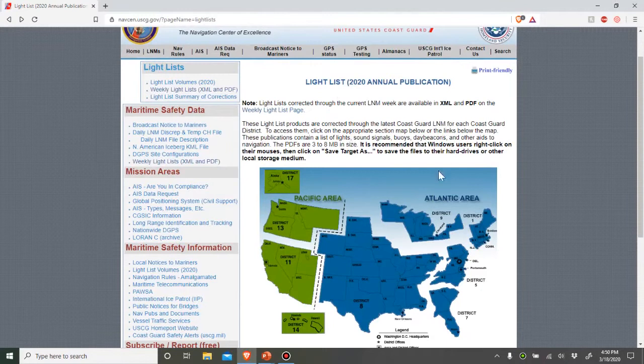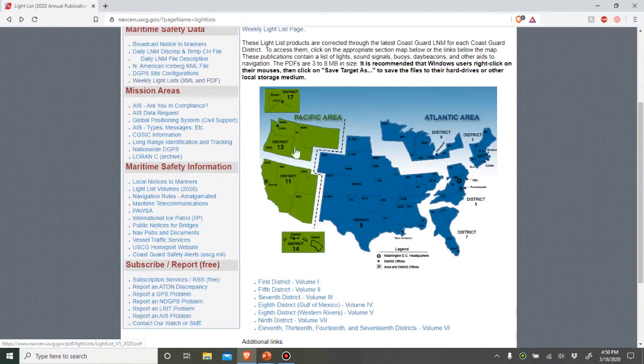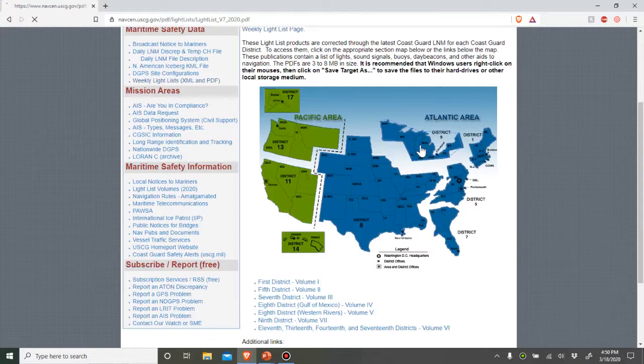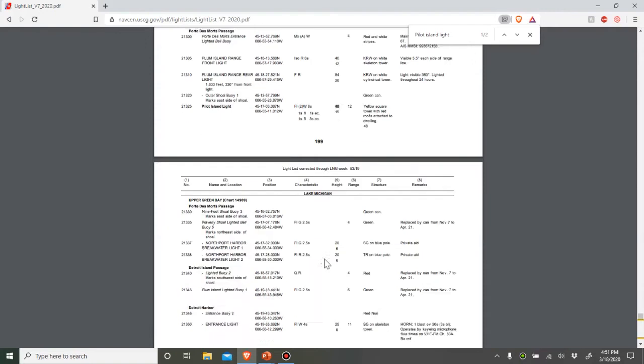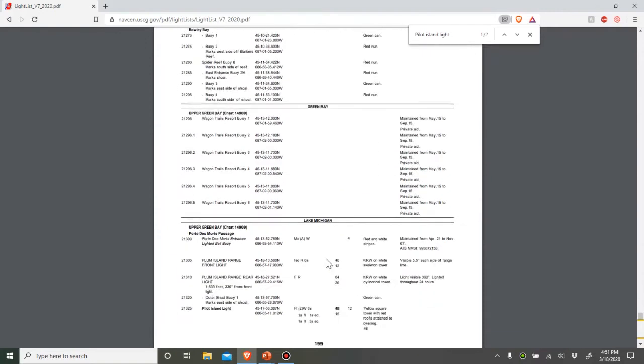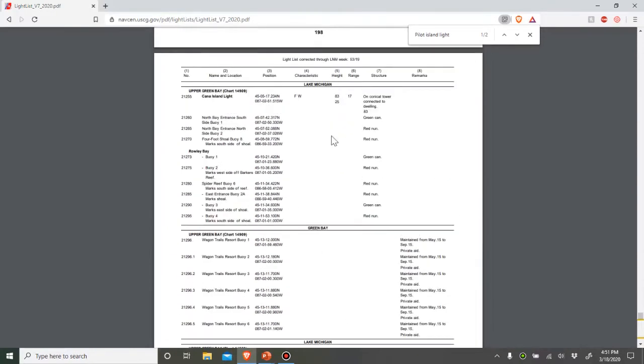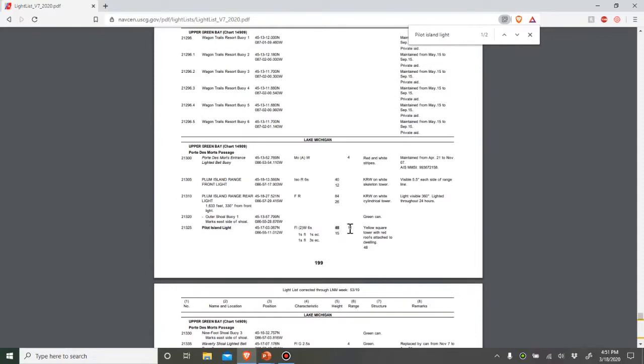If we go to the Coast Guard website, you can also just Google it, look for light list USCG light list, and you can get weekly updates divided up by district. In our case, we're looking at the Great Lakes. This is the light list for the Great Lakes. Here's Pilot Island Light. The height is in column five, it's 48, and the distance is 12. That matches up with our chart.